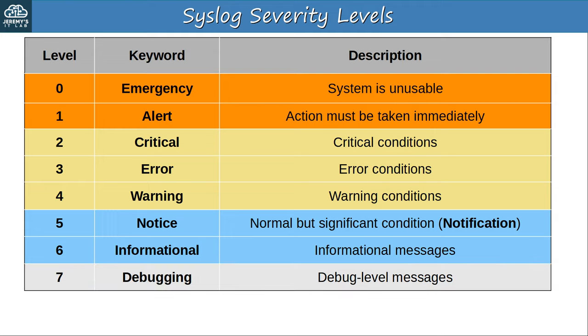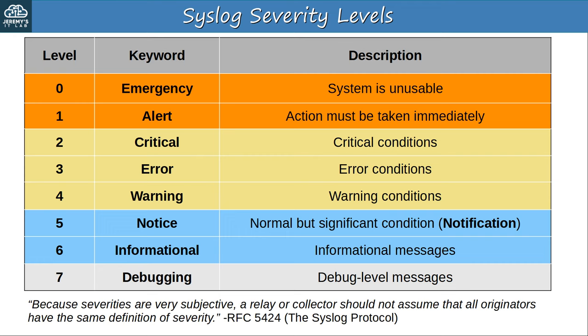The RFC doesn't give detailed definitions about exactly what events fit into each severity level, so each vendor will interpret these levels differently. As the RFC states: 'Because severities are very subjective, a relay or collector — basically a syslog server — should not assume that all originators have the same definition of severity.' That's from RFC 5424. Basically it means you shouldn't expect a Cisco router's warning level to be exactly the same as a Juniper router's warning level.